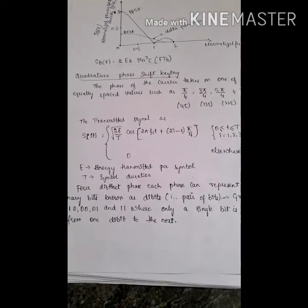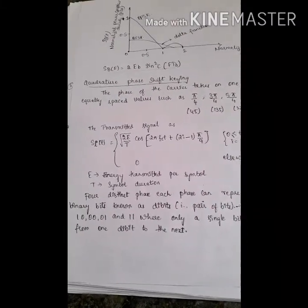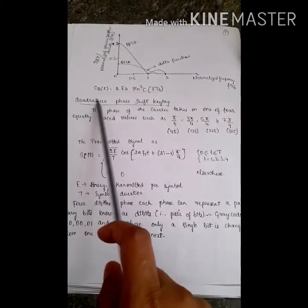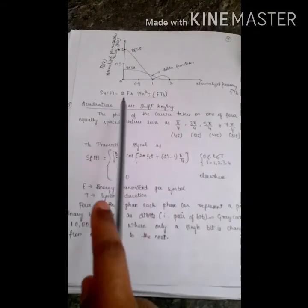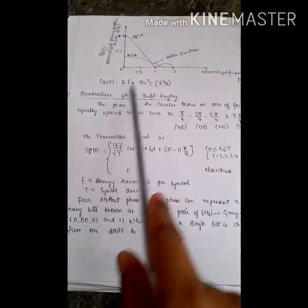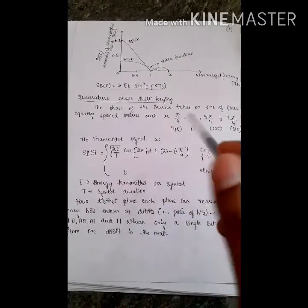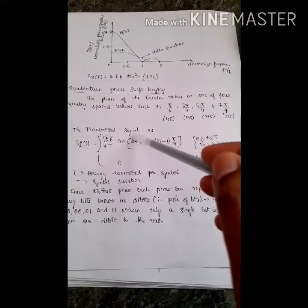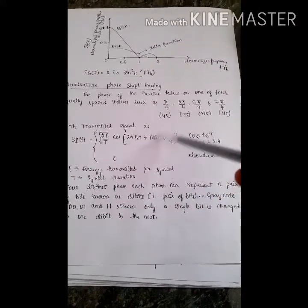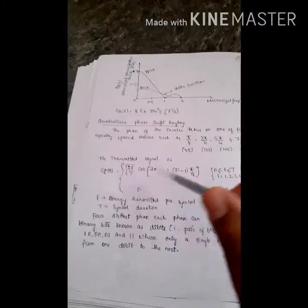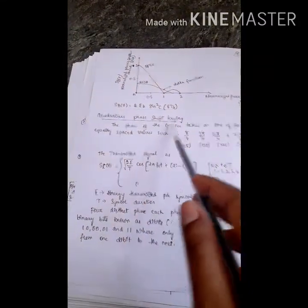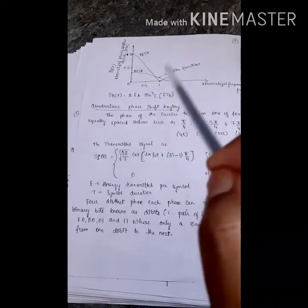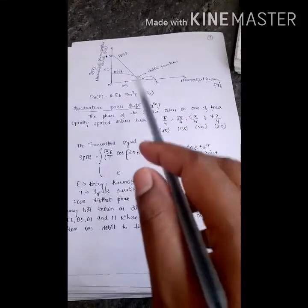The next topic is Quadrature Phase Shift Keying (QPSK). The important goal in this section is the efficient utilization of the channel bandwidth. This is also called a bandwidth conservation modulation scheme — that is, Quadrature Phase Shift Keying.